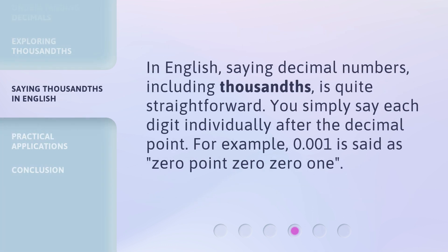In English, saying decimal numbers, including thousandths, is quite straightforward. You simply say each digit individually after the decimal point. For example, 0.001 is said as zero point zero zero one.